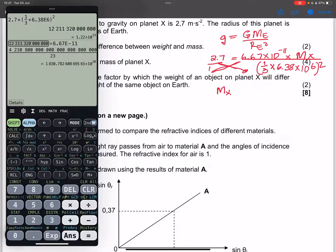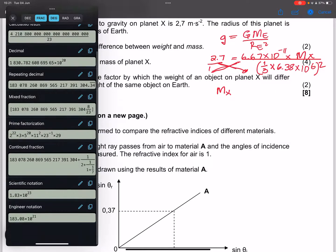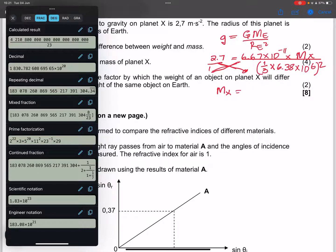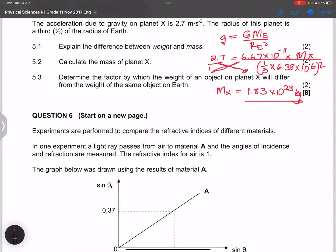So that means that the mass of this planet, let's just put it in scientific notation. So the mass of this planet would actually be 1.83 times 10 to the power 23. And this is kilograms. So that is how we're going to get the mass of planet X.